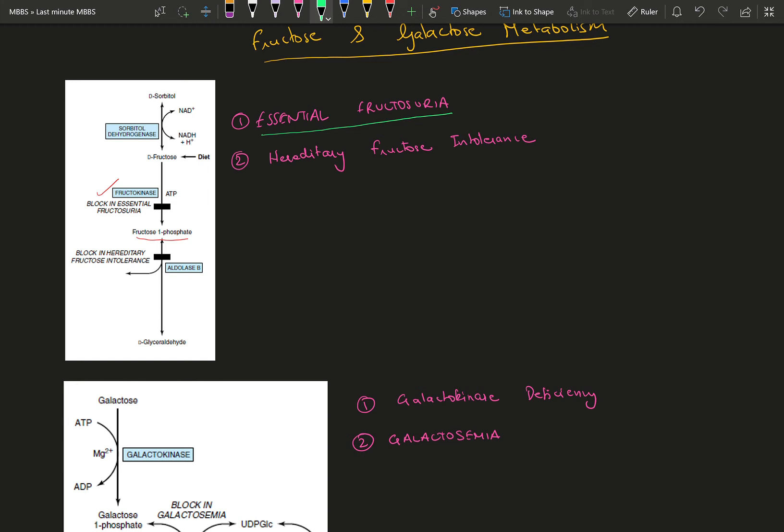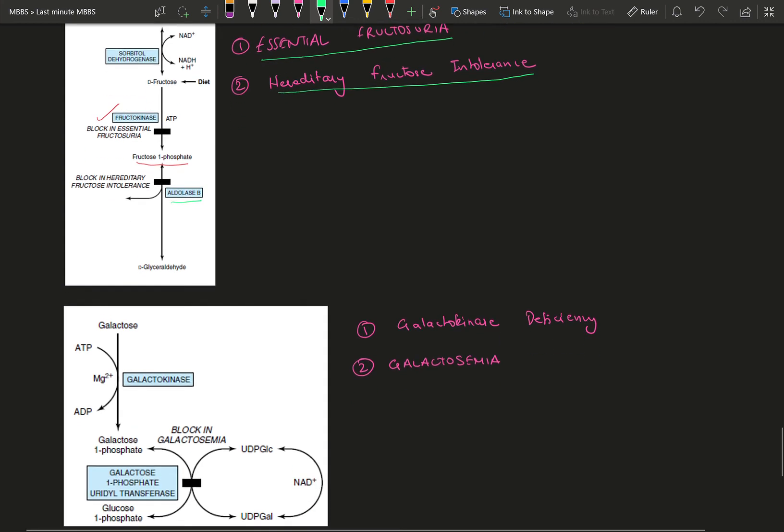And second thing is aldolase B. Deficiency in aldolase B is going to cause hereditary fructose intolerance. What this fructose intolerance is going to do is there is going to be accumulation of fructose 1-phosphate. And fructose 1-phosphate is going to cause problems for us by transforming into other forms. Mostly the link between fructose and glucose is this compound called sorbitol, which causes very notorious problems.